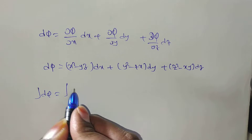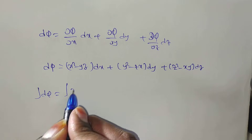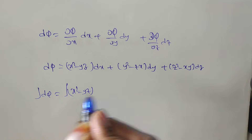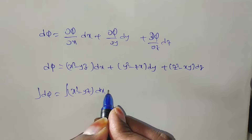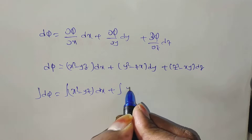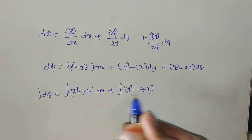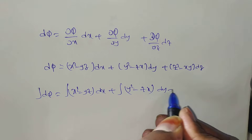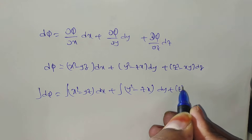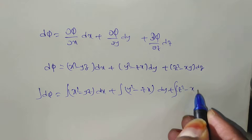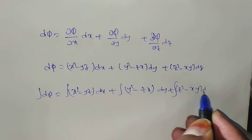First I will write the integration, then apply the inspection method. The terms are: (x² − yz)dx + (y² − zx)dy + (z² − xy)dz.